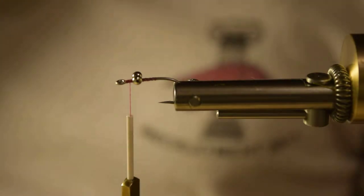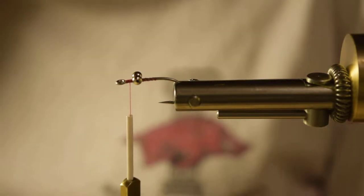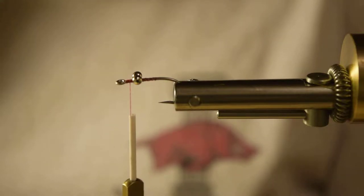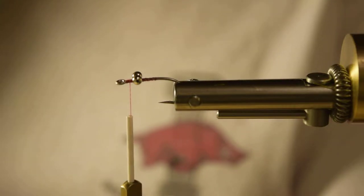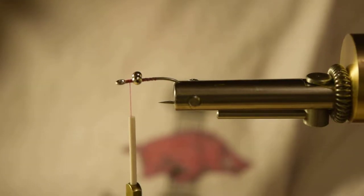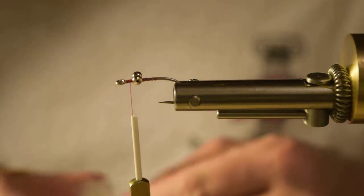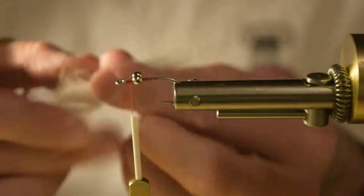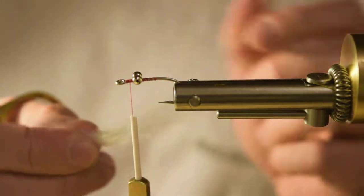We're going to take some white craft fur here. I'm going to cut off a nice little section. I don't have to go crazy with it, but I try to do probably a square inch of area is what I usually cut off. I'm going to cut all that off there. So I have a nice little piece right here.